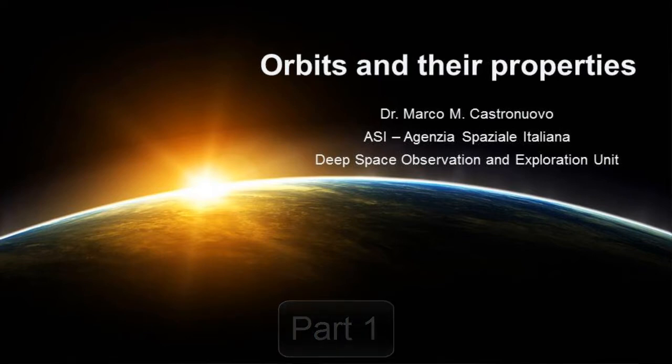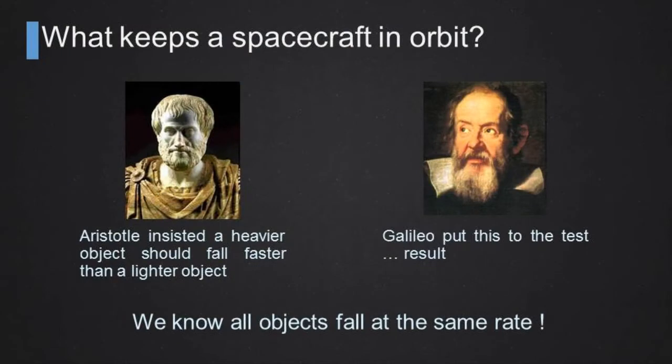I think we can start from the basics. The first thing is we can ask ourselves what keeps a spacecraft in orbit. Several centuries ago one of the first scientists, Aristotle in Greece, insisted that heavy objects should fall faster than lighter objects. But it took several centuries to understand that this was not true.